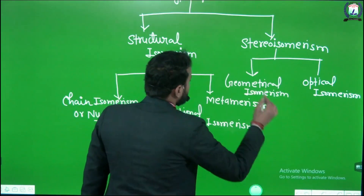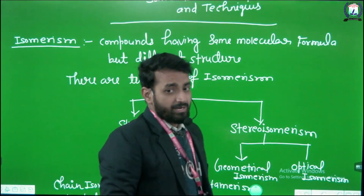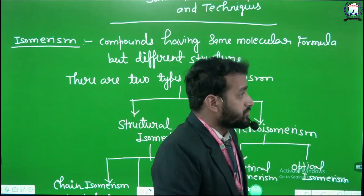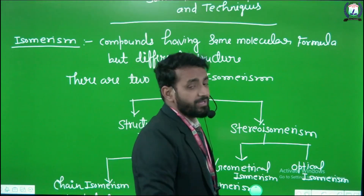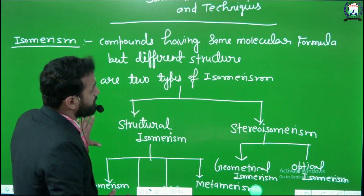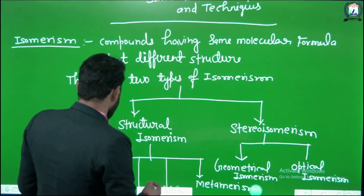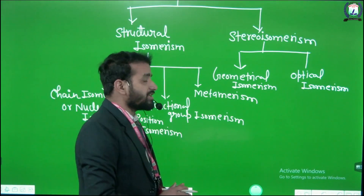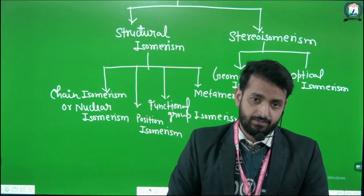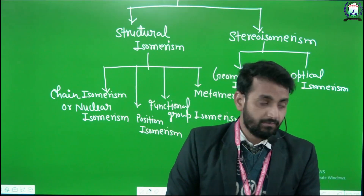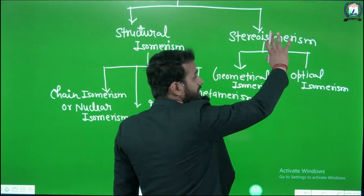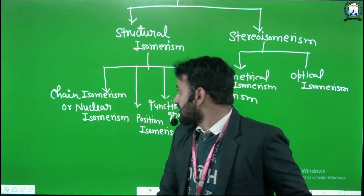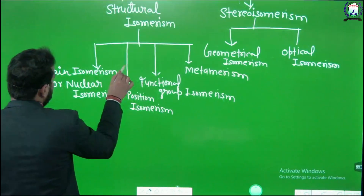Let us recall once more. What is isomerism? Compounds having the same molecular formula but different structures are called isomers. There are two types of isomerism: structural and stereo. There are four types of structural isomerism — chain isomerism, position isomerism, functional group isomerism, and metamerism. Stereo isomerism has two types: geometrical and optical isomerism.